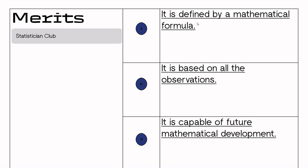As you know, for ungrouped data, the mathematical formula for harmonic mean is: harmonic mean equals small n over summation 1 over xi. So it is defined purely by a mathematical formula.